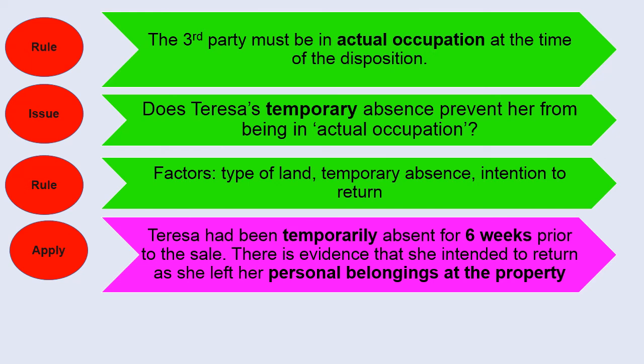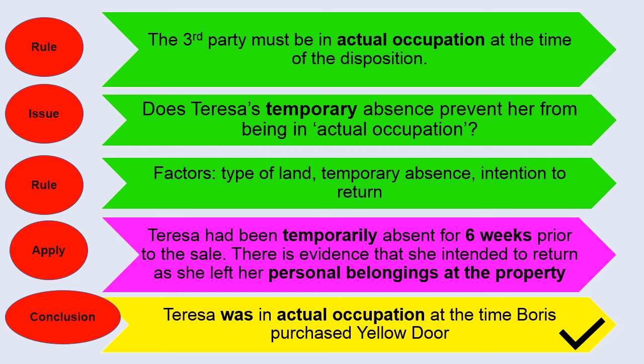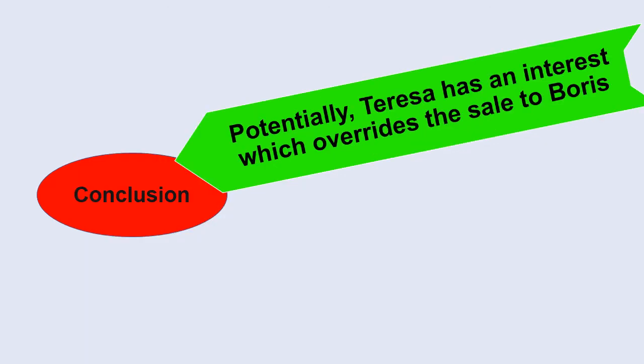So when we apply those factors to this scenario, well, it's residential property. We know that the absence was temporary because the purpose of the absence was to visit her mother and that it was for a relatively short period of time. So it's only for six weeks. And we also know that there is some physical evidence at the property that she intended to return because she left her personal belongings at Yellow Door. So the conclusion that we can reach on this particular issue is that Teresa was in actual occupation at the time Boris purchased Yellow Door. So our final conclusion in relation to the general rule is that potentially Teresa does have an interest which will override the sale to Boris. And the reason that I've said potentially has an interest which would override is because the next stage would be to consider whether any of the exceptions to the general rule applies. And that's what I'm going to be looking at in the next video.